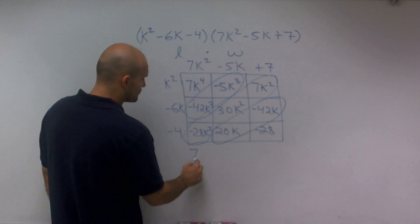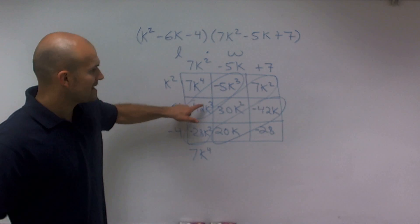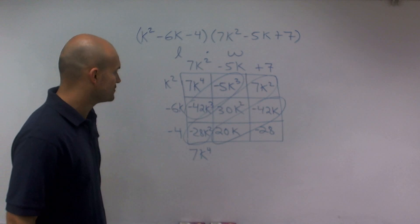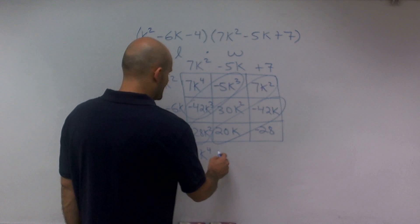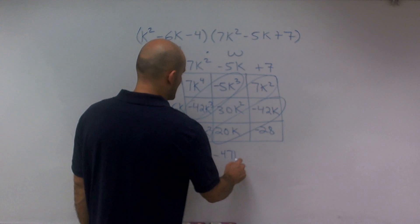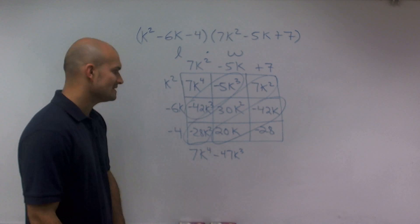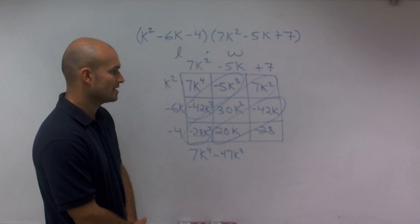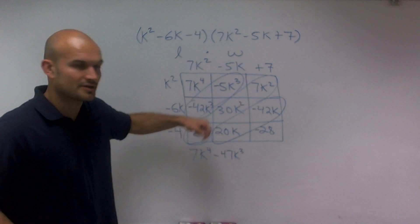So now what I'm going to do is just write out my product. So I have 7k to the fourth. Then my k cubed, I can combine these. So negative 42k cubed minus 5k cubed is negative 47k cubed. Negative 28k squared plus 30k squared plus 7k squared. Now why am I saying plus? Because they're positive, so there would be a plus.